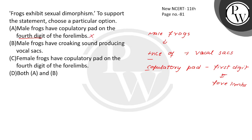This option is incorrect. Male frogs have croaking sound-producing vocal sacs — this is correct. Next, female frogs have copulatory pads on the fourth digit of the forelimb — this is incorrect and it is absent. The correct option is B. This information is from the new NCERT Class 11, page number 81. Thank you.